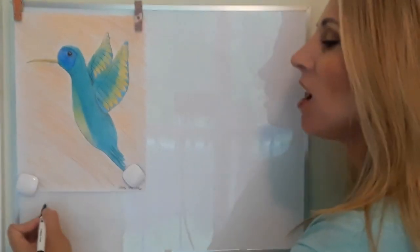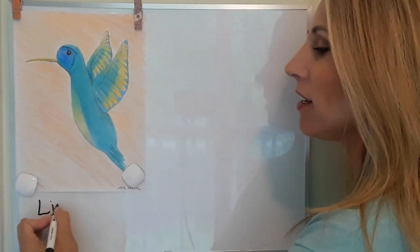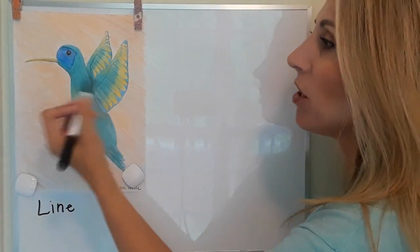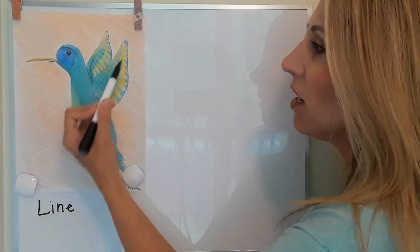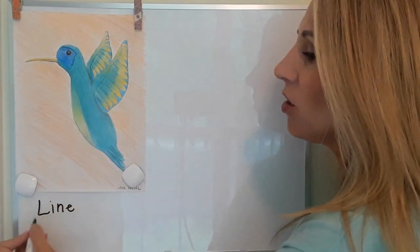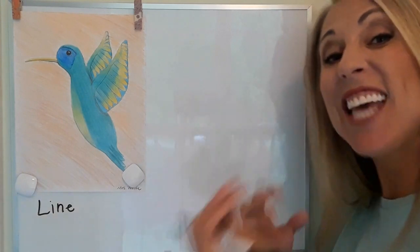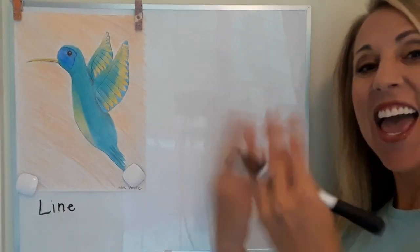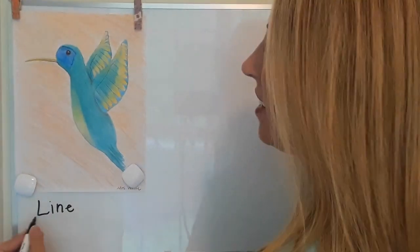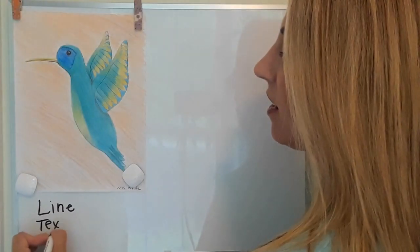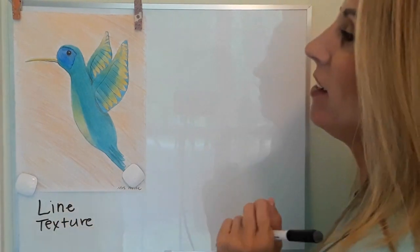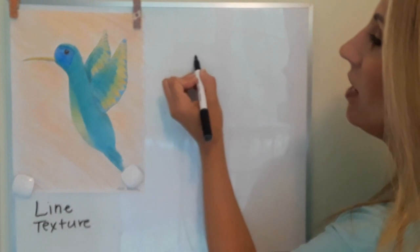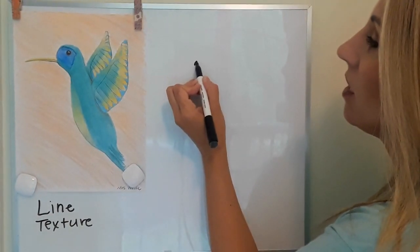To draw our hummingbird today we're going to be using two elements of art: line to draw the outline or contour line of the bird, and then within the bird the feathers are going to use the art element texture — how something looks like it feels. So lines and texture. Let's get started!